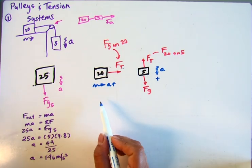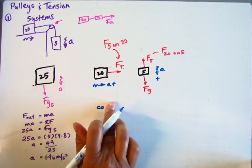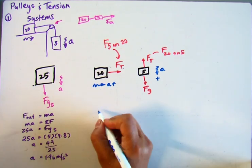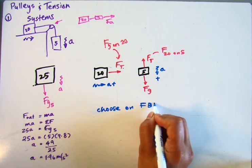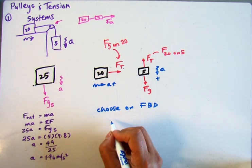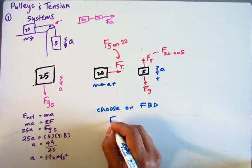Now, we can choose. Choose one free body diagram. We don't have to do this twice. We choose one free body diagram to analyze. Let's do this one. It's easier. There's only one force on it. So I'm going to say F net equals Ma.